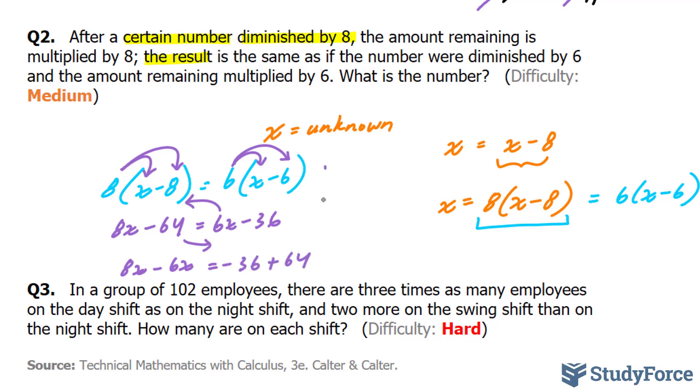8x minus 6x is equal to negative 36 plus 64. And since I'm running out of room, I'll complete my answer right here. 8x minus 6x is 2x. And minus 36 plus 64 is 38. Positive 38. Therefore, x is equal to 19.